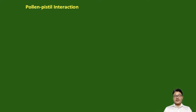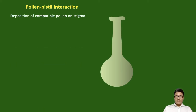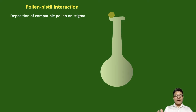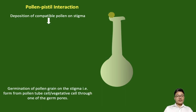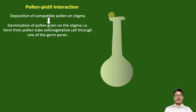There are different step-by-step events occurring in pollen pistil interaction. A flowchart is shown to make understanding clearer. On the pistil, only compatible pollen grains will land, undergo successful deposition and recognition, and germination of the pollen grain starts on the stigma. Germination here refers to the formation of a pollen tube from the pollen tube cell or vegetative cell through the germ pore.